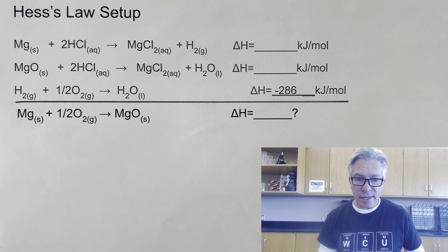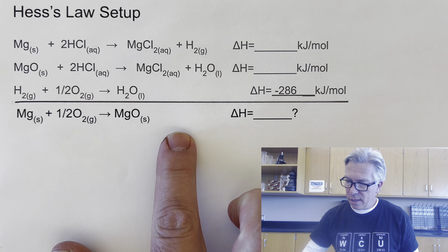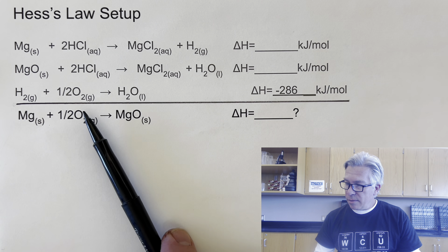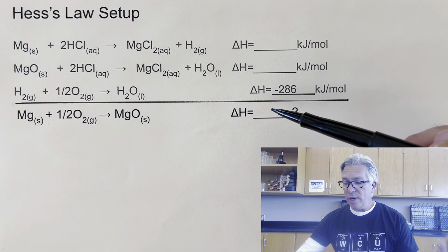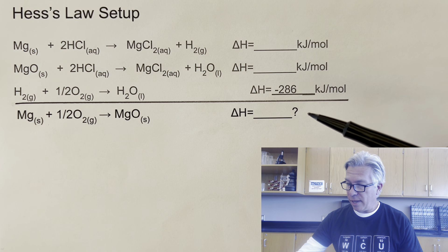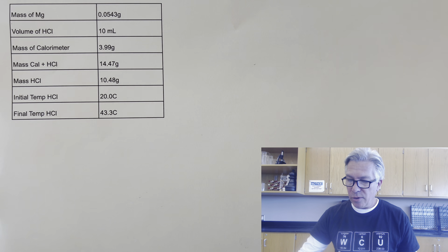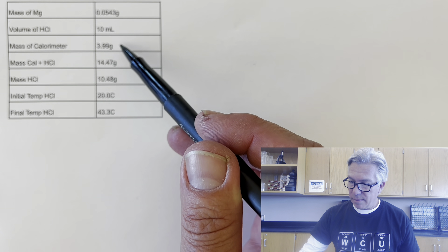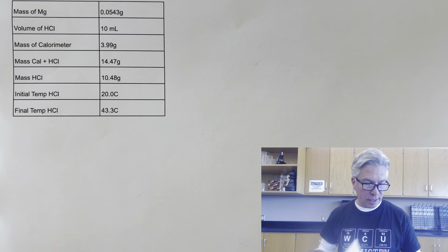Now that we have our laboratory data, it's time to do some analysis and figure out our final answer. Just a reminder: this is our Hess's Law setup with magnesium and hydrochloric acid for the first reaction, magnesium oxide and hydrochloric acid for the second reaction, and then our reference equation for the third. Hess's Law says that if we can get these reactions to add up to the overall reaction, we can add up the delta H's. In trial one, the mass of magnesium is 0.0543 grams — a very small amount — along with the mass of the HCl and my initial and final temperatures.